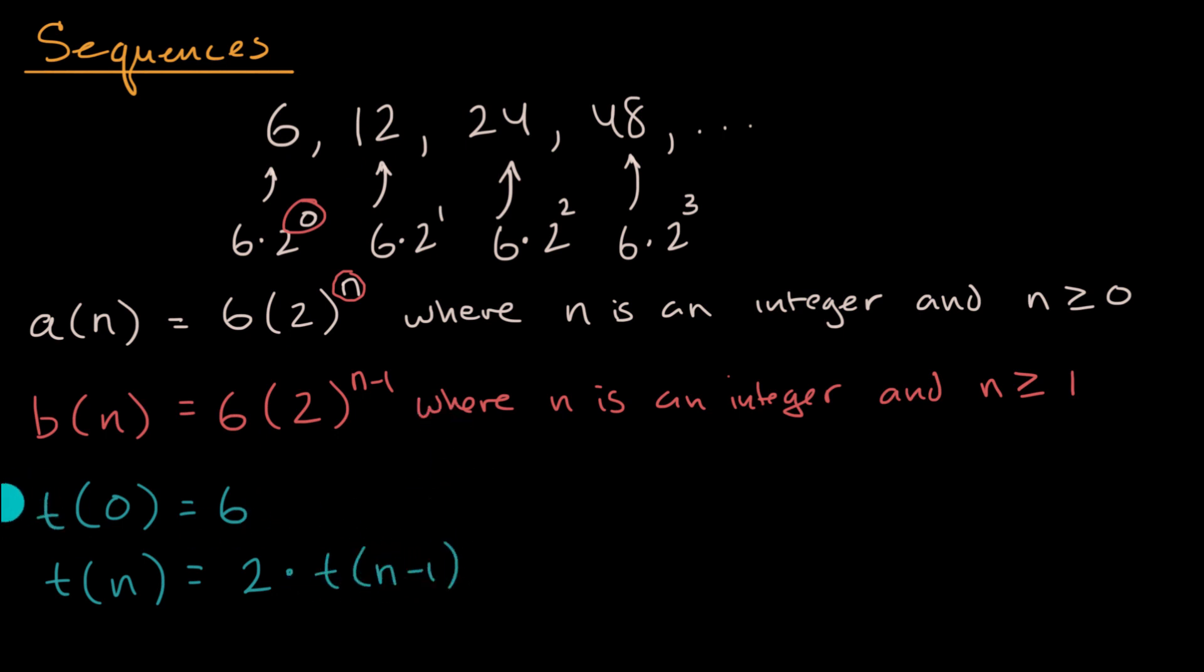And then this is going to be, or maybe I'll write it this way, where n is an integer and n is greater than or equal to zero. This would also generate the sequence.